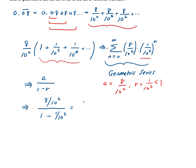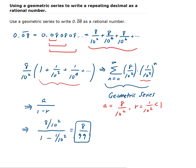Simplifying this will give us 8 over 99, and that's the rational value that we want. So 0.08 repeating, we can rewrite this as 8 over 99. This is a very nice example where we can use a geometric series to take a repeating decimal and write it as a rational number.